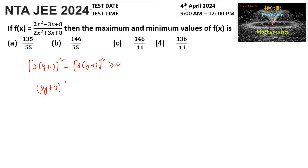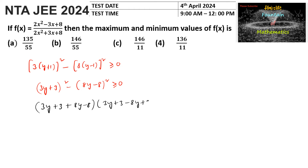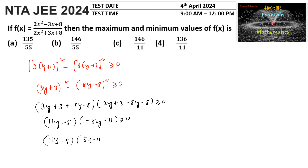Using the a² - b² = (a+b)(a-b) identity, we get (3y + 3 + 8y - 8)(3y + 3 - 8y + 8) ≥ 0, which simplifies to (11y - 5)(-5y + 11) ≥ 0. Multiplying both sides by -1 (reversing the inequality): (11y - 5)(5y - 11) ≤ 0.